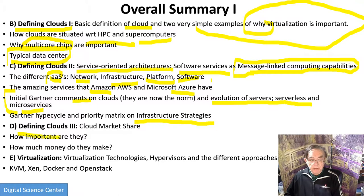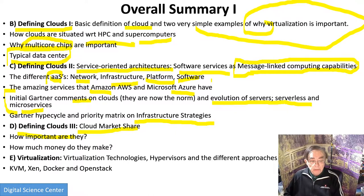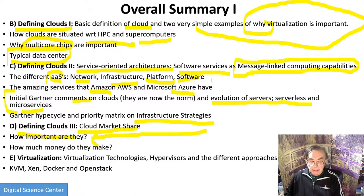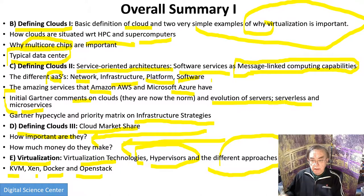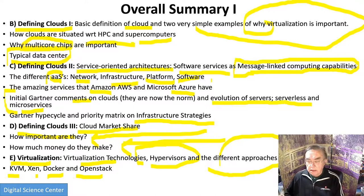In the next subsection, number three, we do market share, where Amazon and Microsoft are somewhat dominant, with Google and IBM hanging in and possibly slightly increasing in the case of Google. Then we quantify why clouds are important and how much money they make. The final section on this sheet, E, is on virtualization — it's more technical. We look at various technologies, discuss hypervisors and the different approaches to them, and give examples: KVM, Xen, Docker, and OpenStack. These are the first four lessons, each a separate video on YouTube.